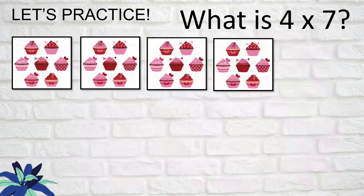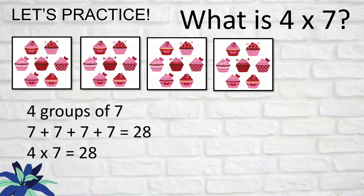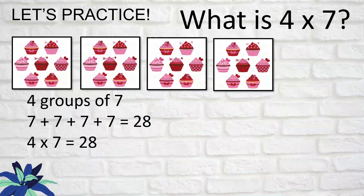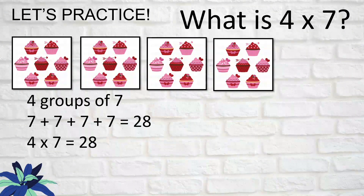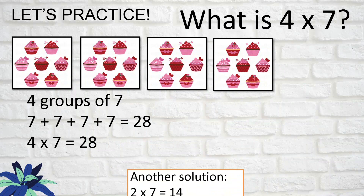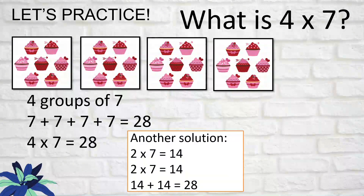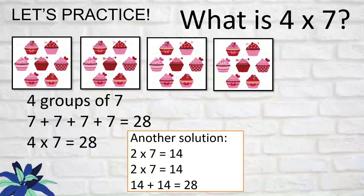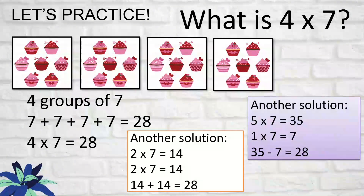Let's practice. What is four times seven? We have four groups of seven, and we add seven four times: four times seven equals 28. Applying another technique: if you remember two times seven is 14, do it twice — another two times seven is also 14. To make it four times seven, add 14 and 14, which equals 28.